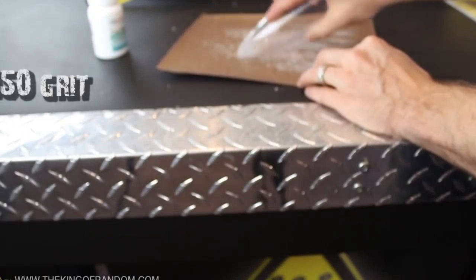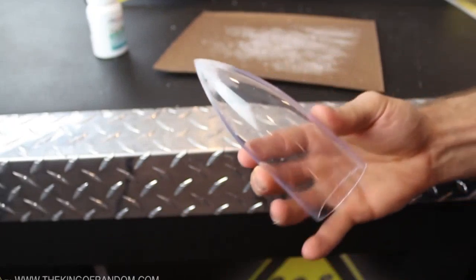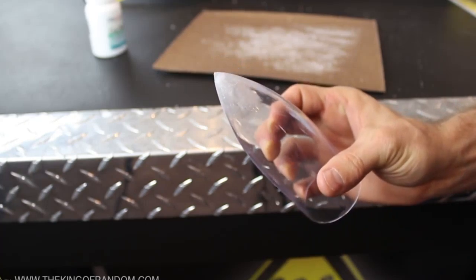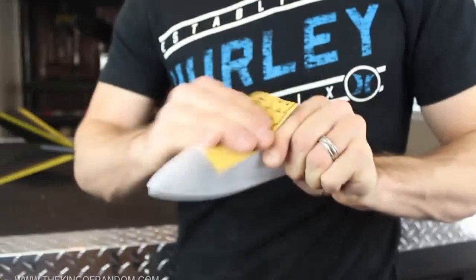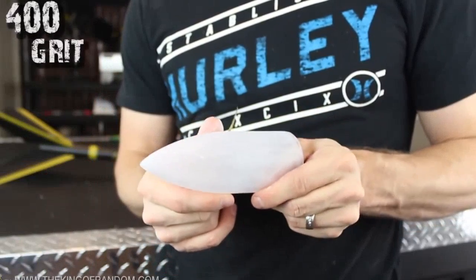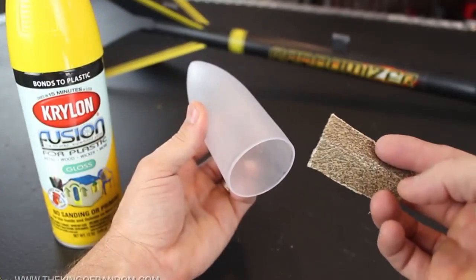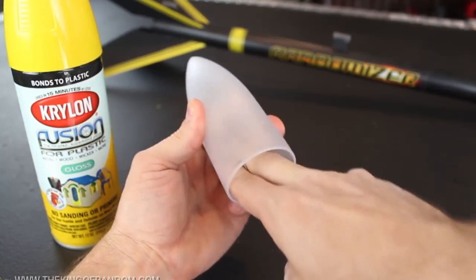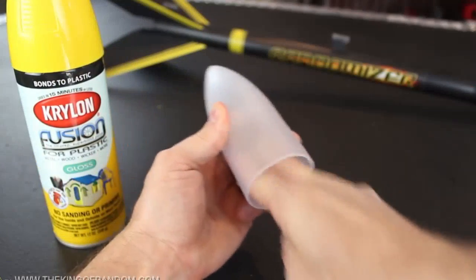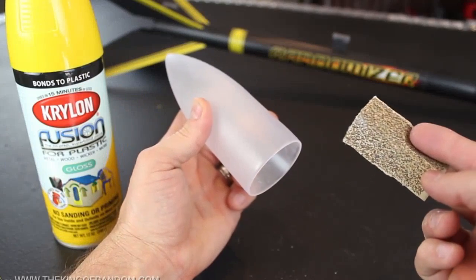I'm using 150 grit sandpaper, and after a couple minutes you can already see the nose cone starting to take shape, and looking a lot more aerodynamic. Now if you go one step further and sand the whole thing with 400 grit, it'll help the paint stick better. But either way, before you paint the nose cone, it's a good idea to rough up the inner wall near the top. Roughing it up now will save you a step when we attach it to the rocket later on.